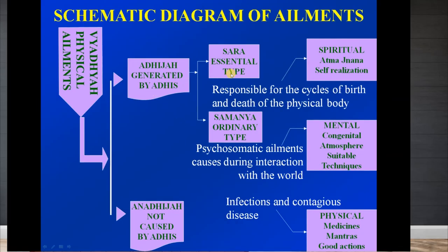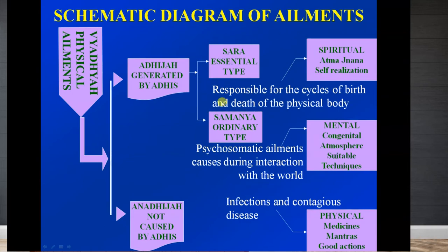Within adhi-java vyadhi there are two further types: sara type and samanya type. Sara type vyadhi refers to congenital elements — diseases we are born with due to past karmas (samskaras). Whatever we do is impressed upon the soul as samskaras, determining future possibilities, including our next birth. Buddha himself, upon attaining enlightenment under the Bodhi tree at Bodh Gaya, recalled 24 past births and recognized that samskaras were responsible for the cycle of rebirth.